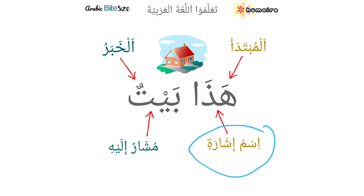The one that you are pointing to — or the thing that you're pointing to — has to be المفرد, has to be singular; has to be المذكّر, masculine; القريب, has to be close; and it could be one who has intellect or non-intellect.